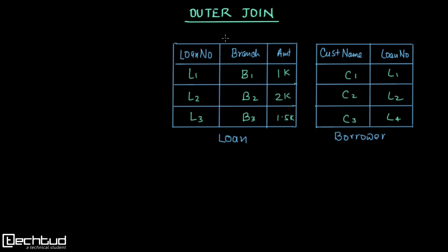In the last lecture we understood how inner join works in SQL. In this lecture we will understand how outer join works and how it can also include tuples for which a corresponding tuple doesn't exist in the other table. For example, in inner join, if we are joining the loan and borrower tables on loan number, then l1 and l2 exist in both tables and those rows will be joined. But l3 doesn't exist in the borrower table and l4 doesn't exist in the loan table, so these two tuples will be ignored and not included in the output. In outer join, however, we will include them in the output.